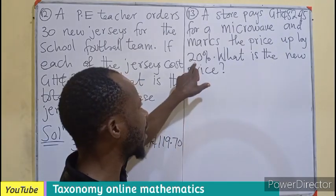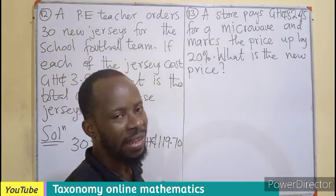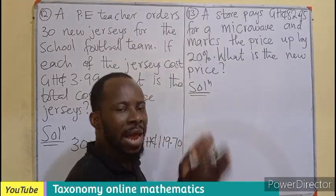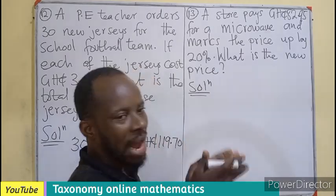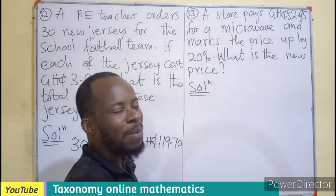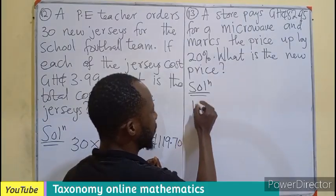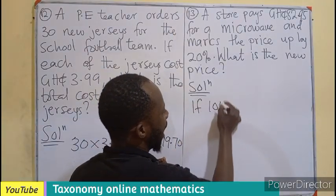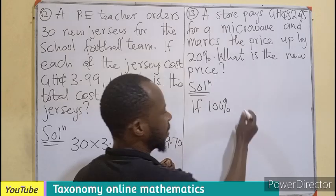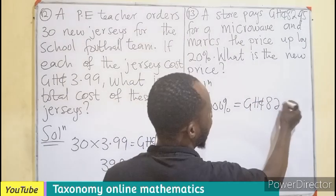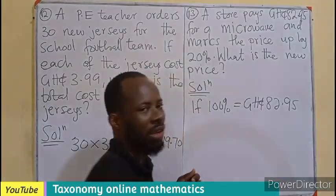So you are increasing the price by 20%. Already, since you are the one selling the microwave, the original price is at 100%. So let's use ratio here. If we have 100% being the original price, giving us 82.95 cedis.